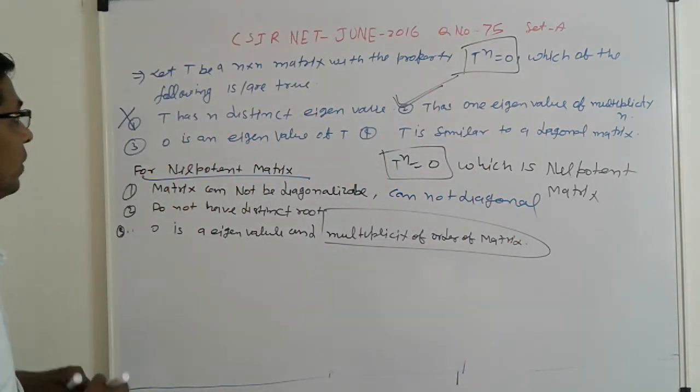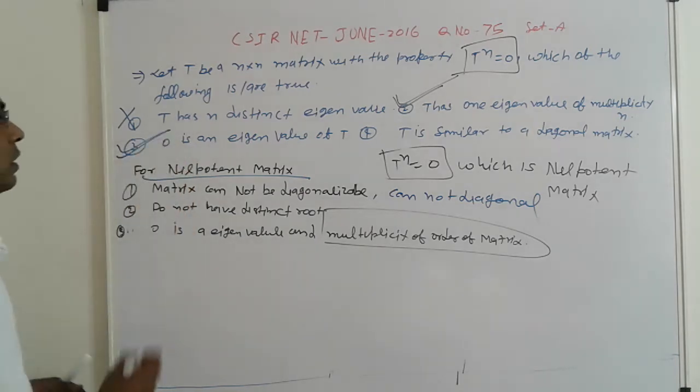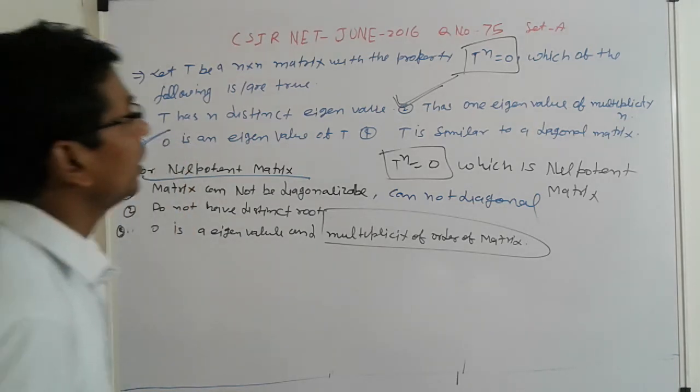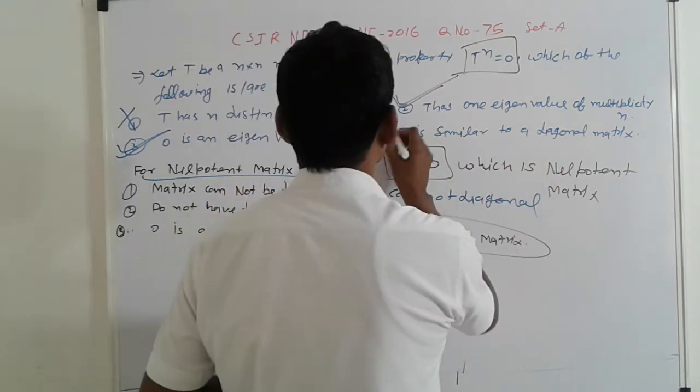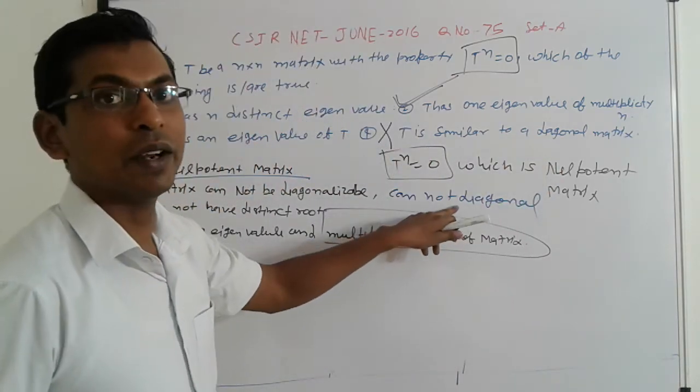Otherwise, here, 0 is eigenvalue of T, which is also correct. And T is similar to the diagonal matrix, not, because here not diagonalizable.